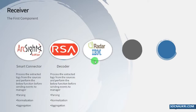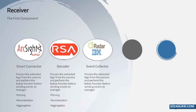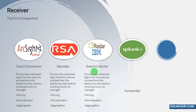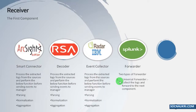IBM QRadar architecture is based on a three-layer approach. The first layer is responsible for data collection, which is done by Event Collector. Event Collector is responsible for collecting logs from different networks and performing parsing and normalization of raw events, then passing those events to the next component or next layer. In Splunk, the receiver is referred to as a forwarder. There are two types of forwarder available in Splunk: Universal Forwarder and Heavy Forwarder.